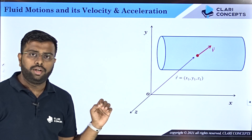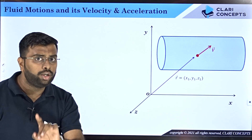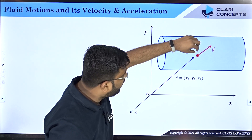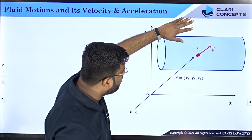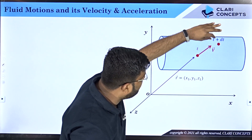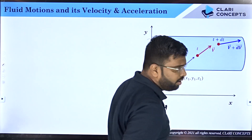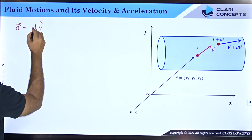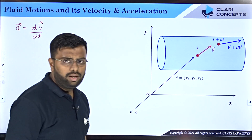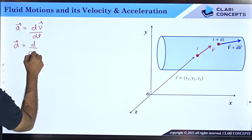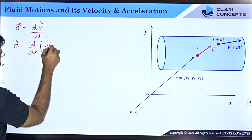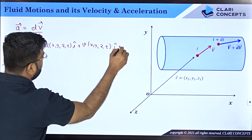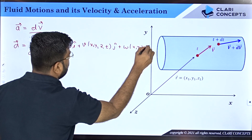Now let us talk about acceleration — understanding acceleration of the fluid is very very essential. A particle at position (x1, y1, z1) has velocity V at time t. After moving along the flow it is found at another position at time t+dt with velocity V+dV. Acceleration is the rate of change of velocity: dV/dt = d/dt of [u(x,y,z,t)·i + v(x,y,z,t)·j + w(x,y,z,t)·k].